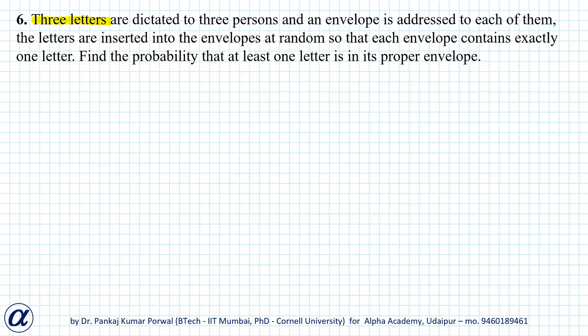In this question, three letters are dictated to three persons and an envelope is addressed to each one of them. The letters are inserted into the envelopes at random so that each envelope contains exactly one letter, and we want to find the probability that at least one letter is in its proper envelope.